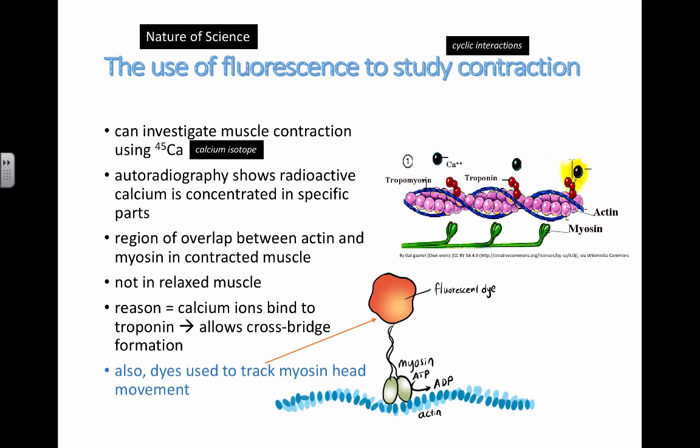Also, fluorescent dyes have been used to actually track myosin head movement. You can see that you actually have a little bit of movement from the heads moving back and forth. That power stroke is what they call it.